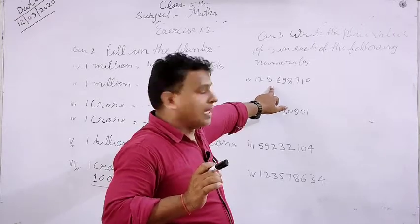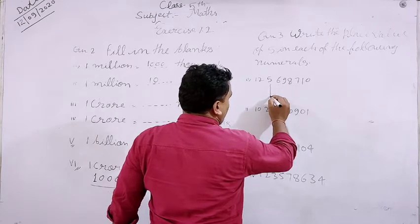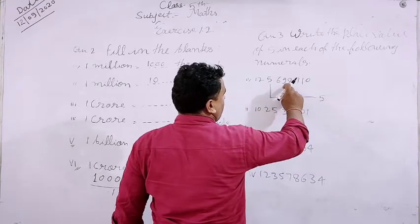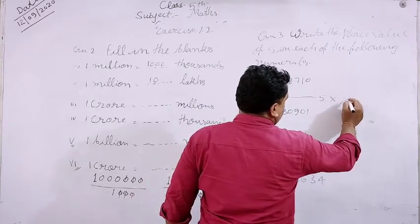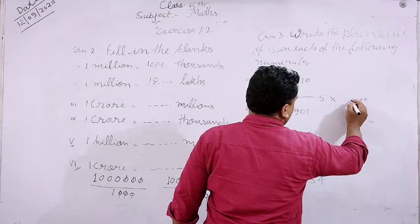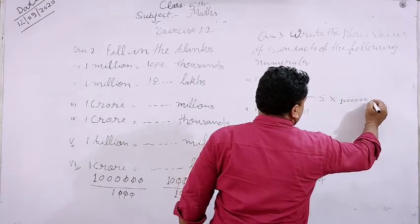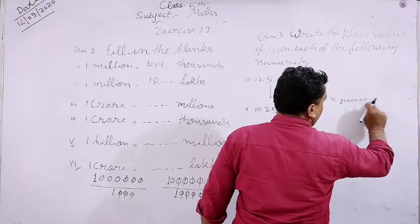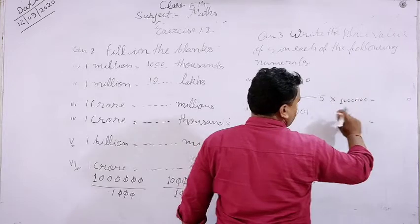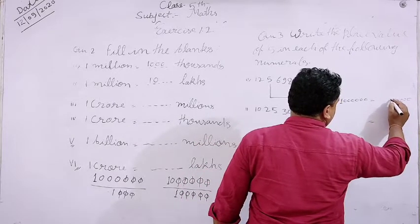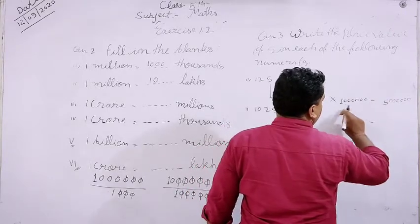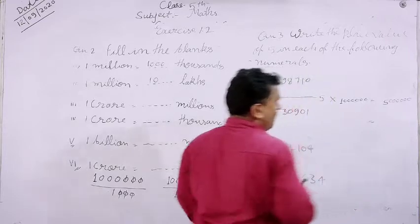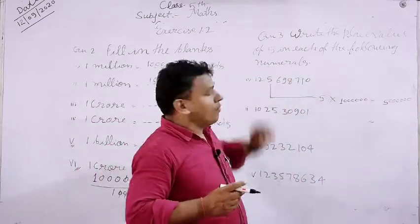Kewal aapko 5 ka place value nikalna hai. Yahan pe 5 number ko select karenge aur note karke dekhenge ki 5 kis place par aa raha hai — ones, tens, hundreds, thousands, ten thousands, lakh, ten lakh. Yahan pe kar dijiye: ones, tens, hundreds, thousands, ten thousands, lakh, ten lakh. Jitne bhi zeros hain — one, two, three, four, five, six — six zeros note kar diye. Uske baad 5 likh diya. Yaani fifty lakh — aapko mil gaya iska place value.